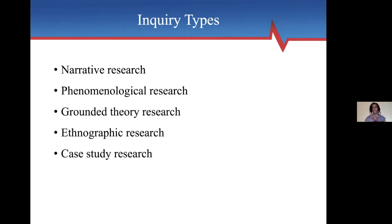Grounded theory research attempts to develop a theory rooted in data from the field — from the views of participants. You collect all this data and come up with a theory. I see the term grounded theory used a lot in what is actually phenomenological research, but unless you've at the end come up with a theory, you probably didn't do grounded theory. Ethnographic research focuses on describing and interpreting a culture-sharing group, involving observing and interviewing. We don't see this a lot in emergency medicine — it takes months and years of being embedded in a community. We see this a lot in sociology.